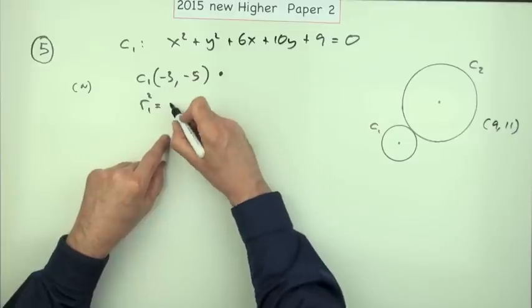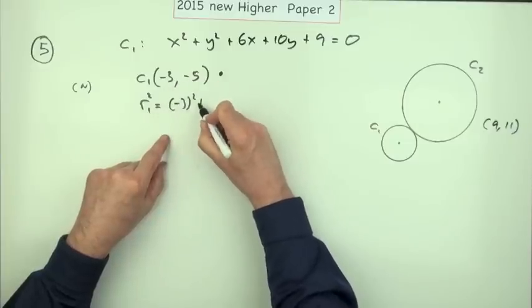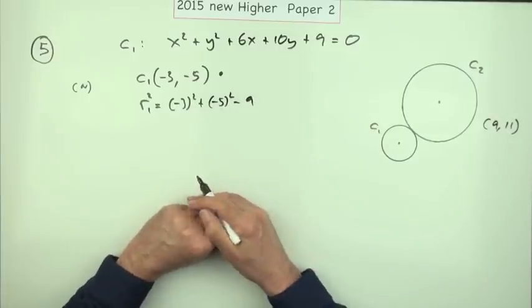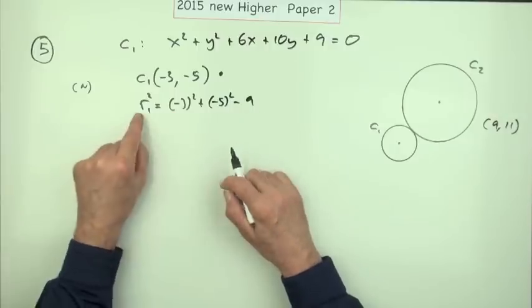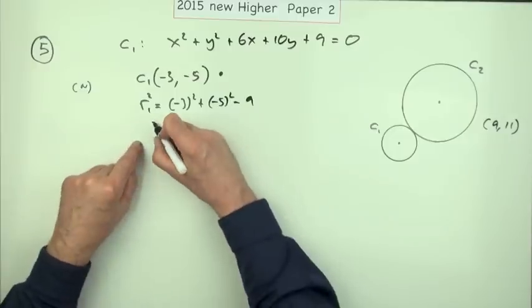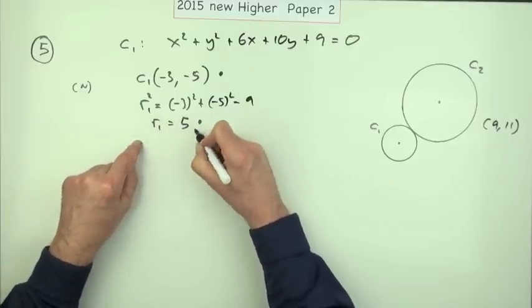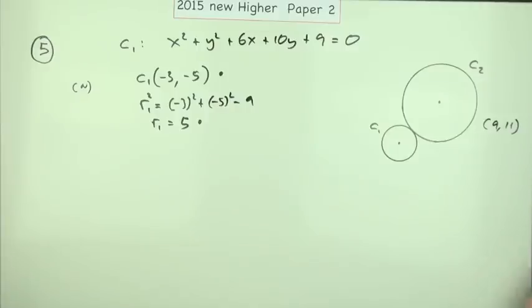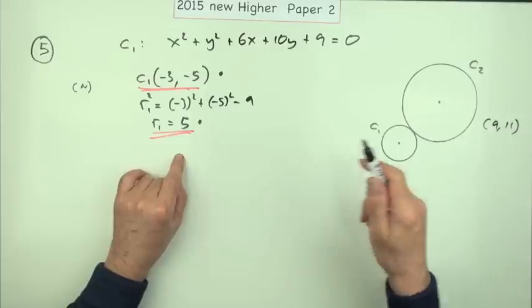Well that's nine taken by nine, that disappears, so the radius squared is the same as five squared, so the radius is five. Again there's just one mark for stating five.